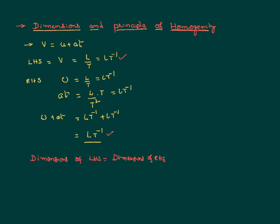It's like saying you cannot add sugar with rice and get something productive. One kg of sugar plus two kg of sugar gives three kg of sugar — that makes sense. But one kg of sugar plus two kg of water gives you neither sugar nor water. That is not a meaningful way of adding physical quantities.